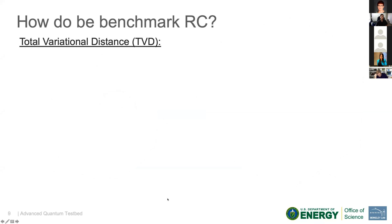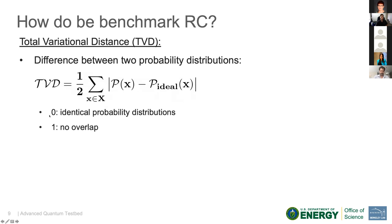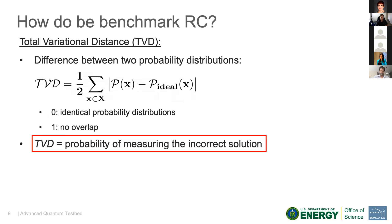How do we benchmark RC? We use a metric known as the total variational distance, or TVD. This metric simply measures the difference between two probability distributions — an ideal distribution and a measured distribution. The sum is over bit strings x in a total possible set of large X. The TVD is bounded by zero and one, where zero means the two distributions are identical, and one means there's no overlap. So if you want a circuit to perform well, you want a low TVD. It's useful to think of it as the probability of measuring the incorrect solution.